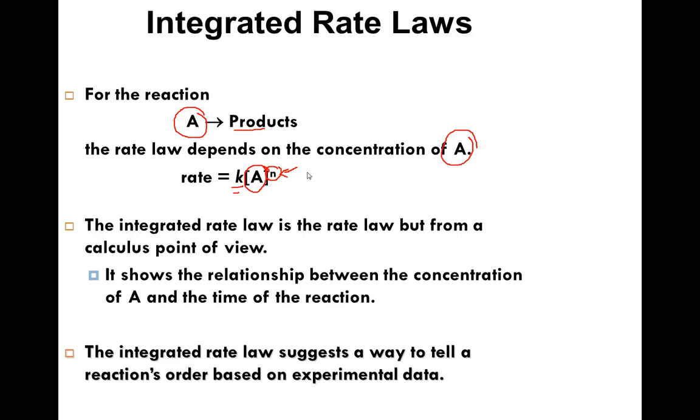Remember, n has to be derived through experimentation, not from a balanced chemical equation. The integrated rate law is the rate law but from a calculus point of view. It shows the relationship between the concentration of A and the time of the reaction. The integrated rate law suggests a way to tell a reaction's order based on experimental data.